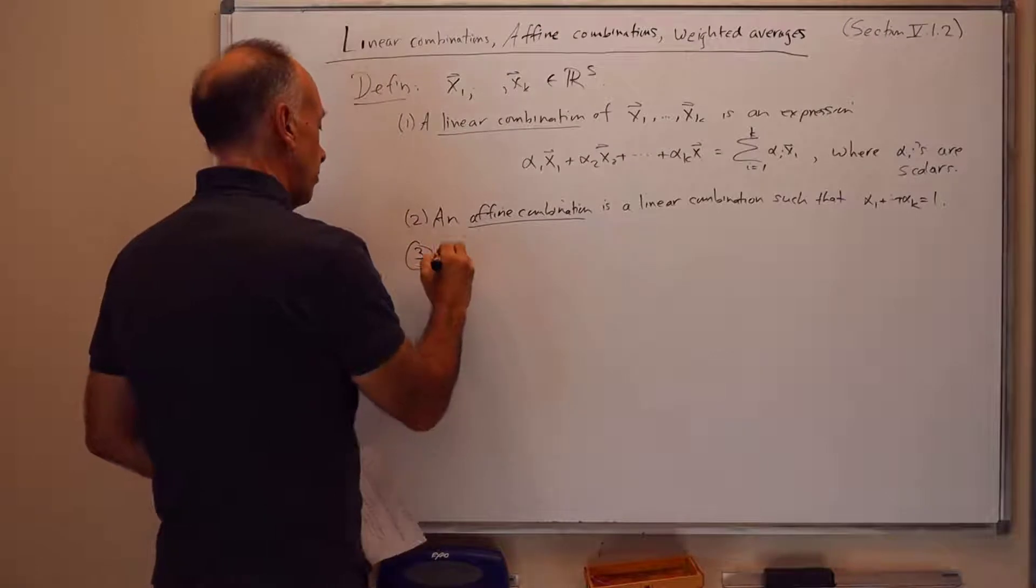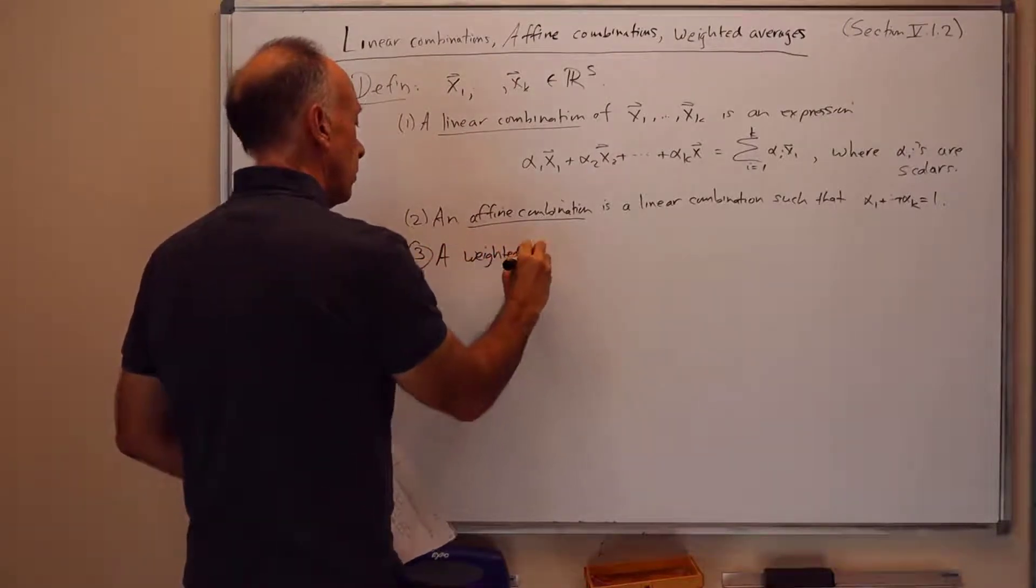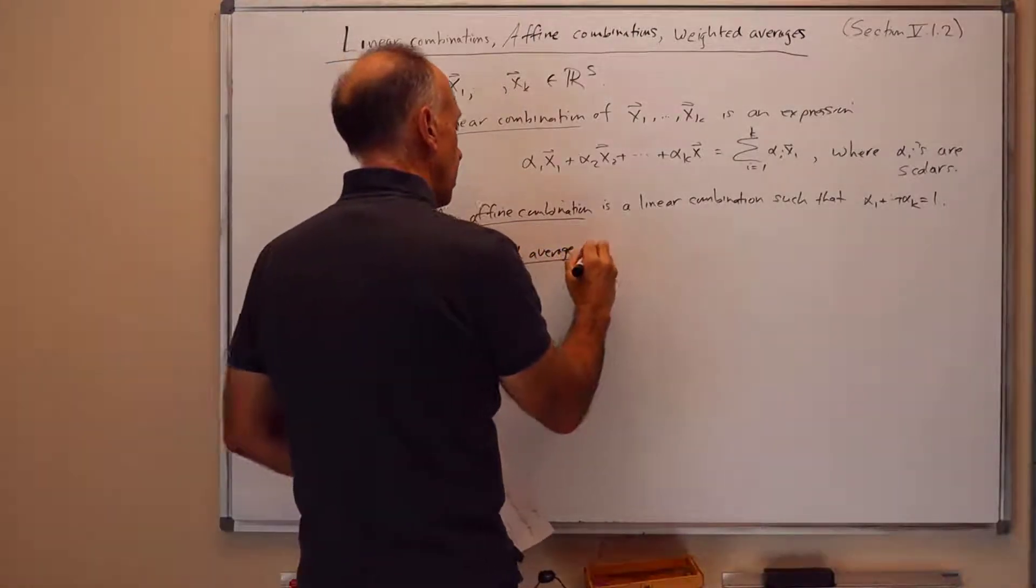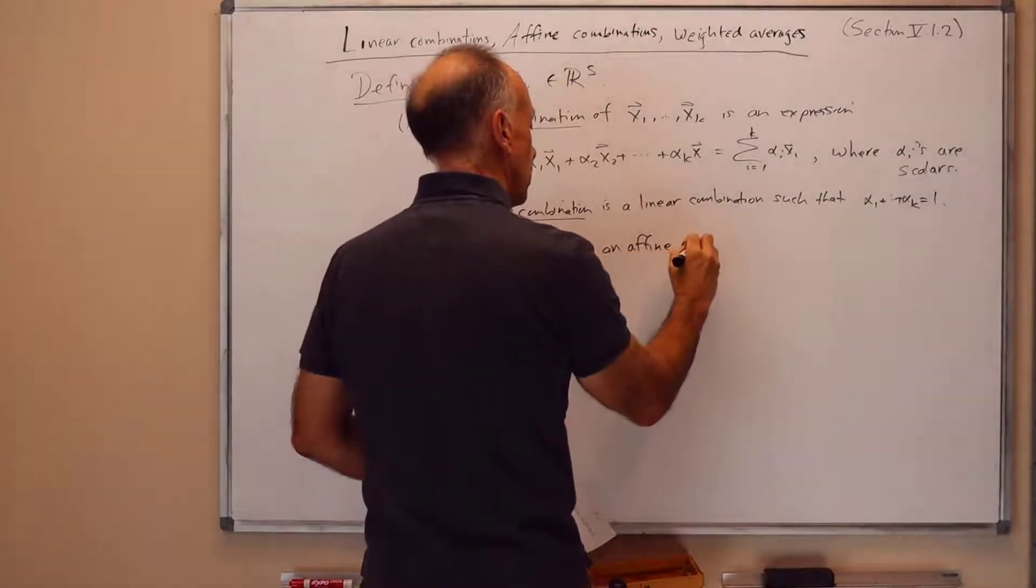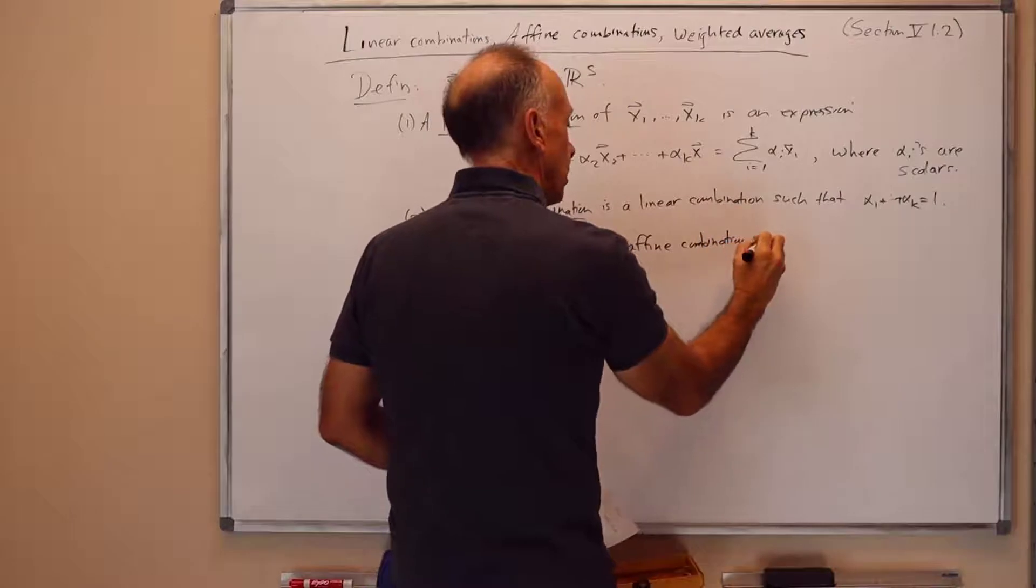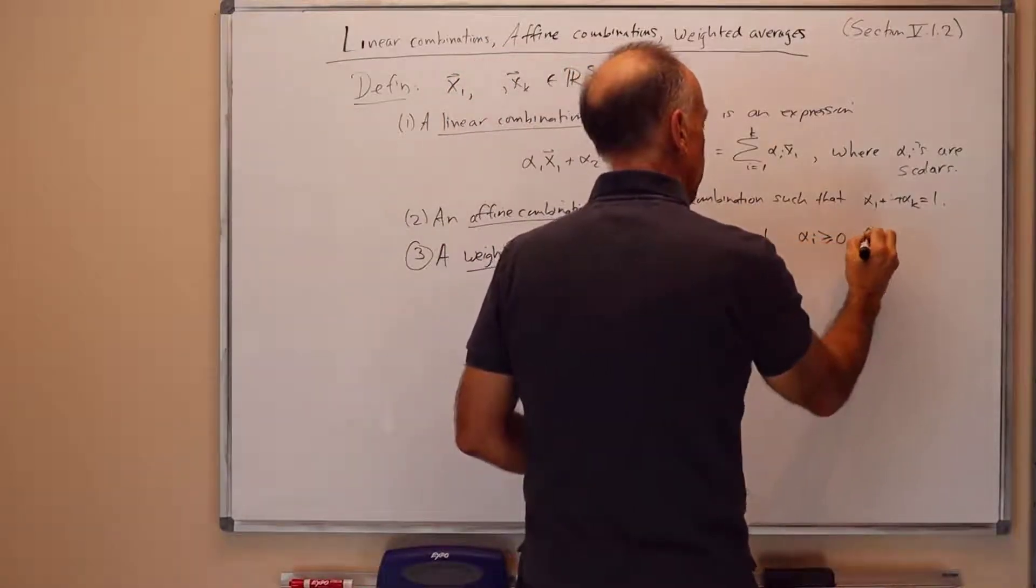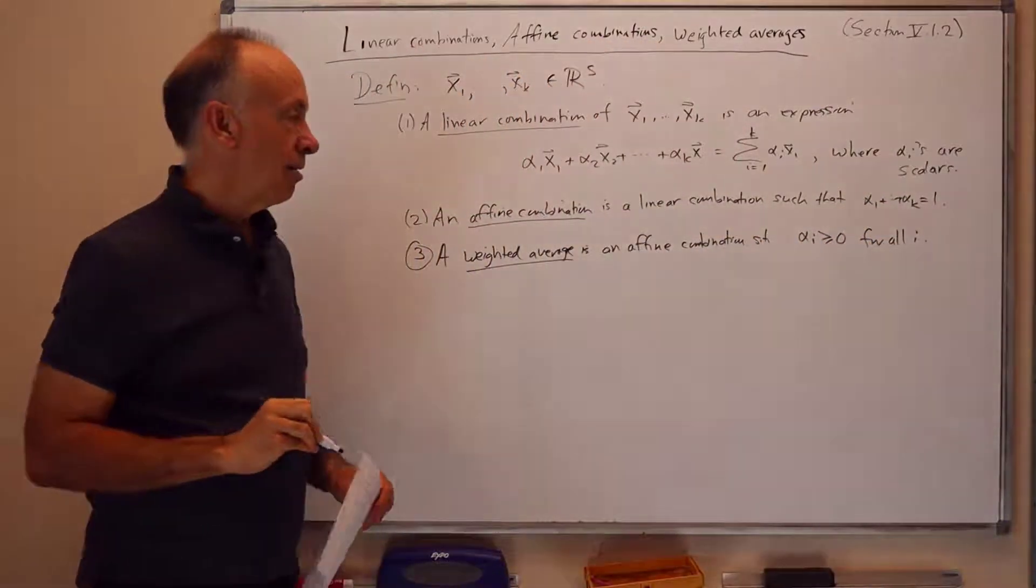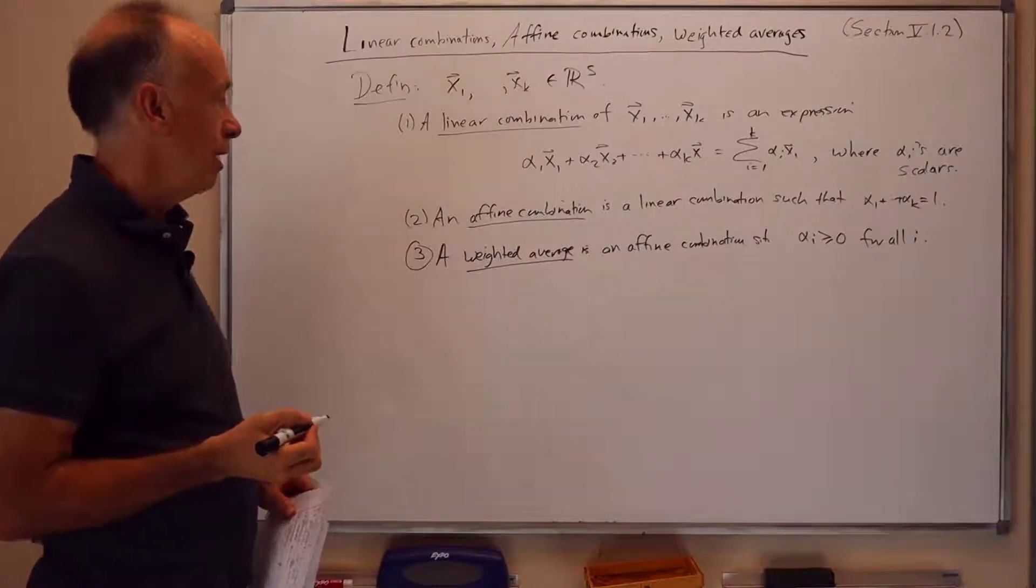A weighted average is an affine combination such that in addition to summing to 1, the coefficients are all greater than or equal to 0. So since they're all greater than or equal to 0 and they all add up to 1, that means they're all in the range 0 to 1.